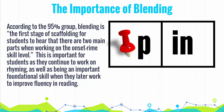Both of the skills covered in this standard are important components of reading. According to the 95% Group, blending is the first stage of scaffolding for students to hear that there are two main parts when working on the onset-rhyme skill level. This will help to improve fluency as readers develop and grow, and will also help students with the skill of rhyming.